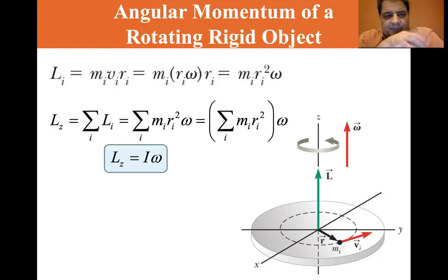So Lz equals the sum of all the little Li's: the sum of mi ri squared omega. Now, if we look at the sum, omega is the same for all particles.